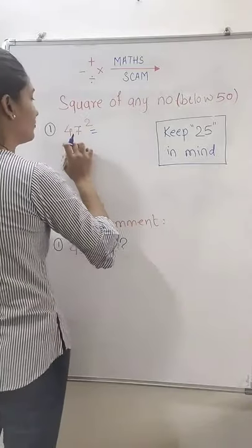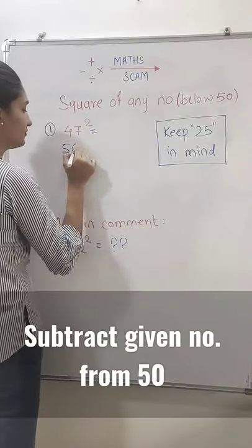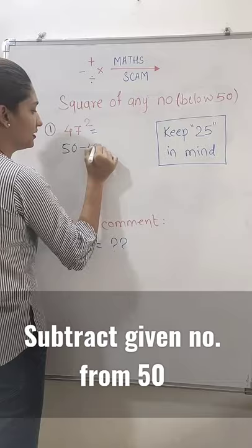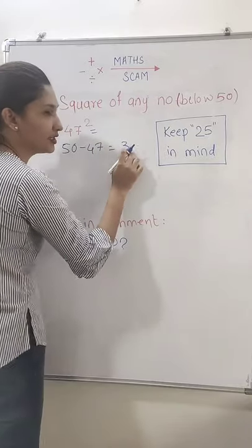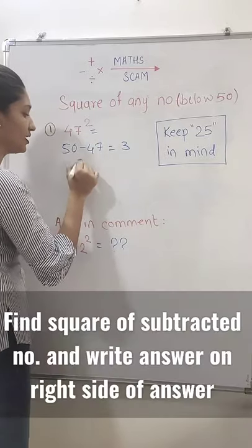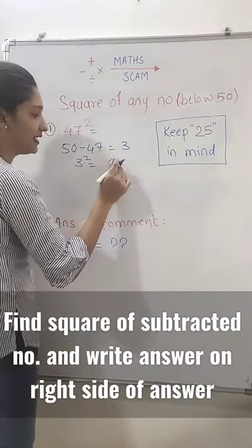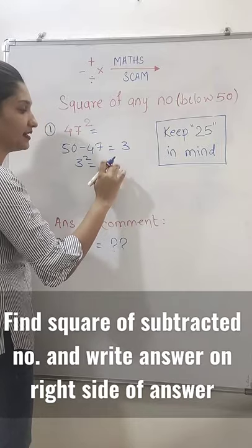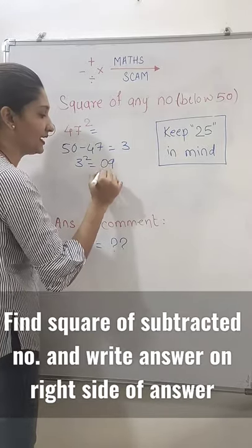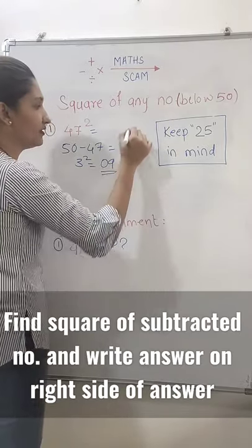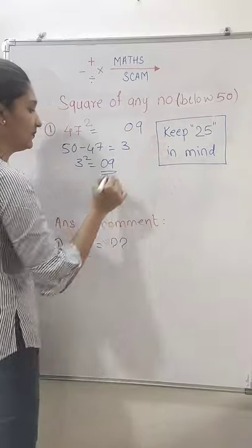First we will subtract 47 from 50. 50 minus 47 is 3. Find the square of 3 — square of 3 is equal to 9. As this is a single digit, we will place 0 in front of that. 09 will go on the right side of our answer.